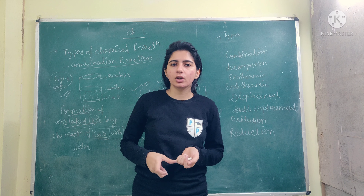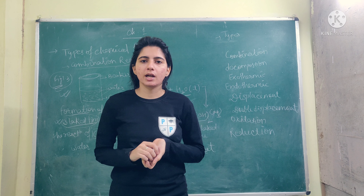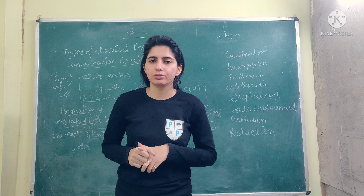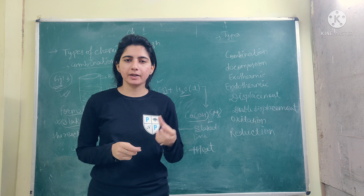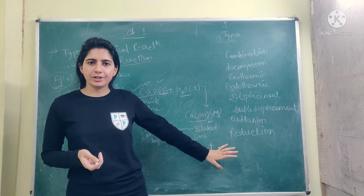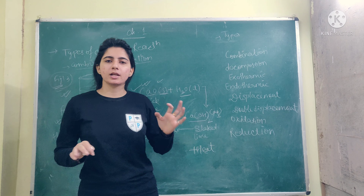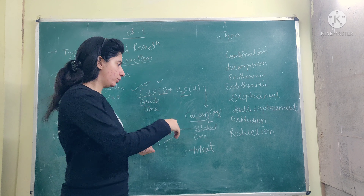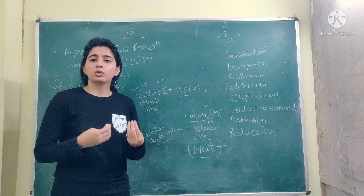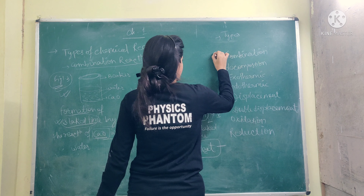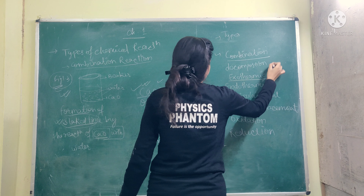So what do you see here? There are two reactants, and they have given you one compound — one product. That type of reaction we call a combination reaction. Combination reaction is that type of reaction in which two or more reactants combine to give a single product. This is the definition — you can underline it in NCERT. There are two reactants and you get one product plus heat released. This type of reaction in which heat is released, we call exothermic.